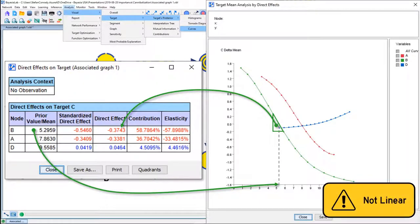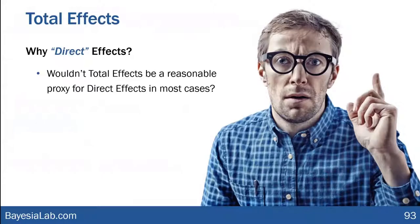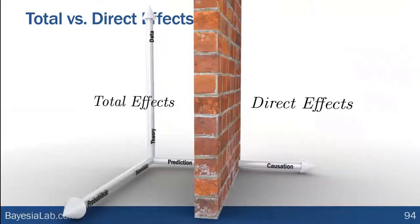Therefore, we really should never look at a report in isolation without also having a good sense of the direct effects plot. A question we often get is: isn't this total-versus-direct-effects distinction a little bit complicated? Couldn't I just stick to total effects as a reasonable proxy? And the answer is absolutely not — that would be a fatal mistake. We need to always very clearly differentiate where these belong: total effects on the prediction side of the wall, direct effects on the causal side.